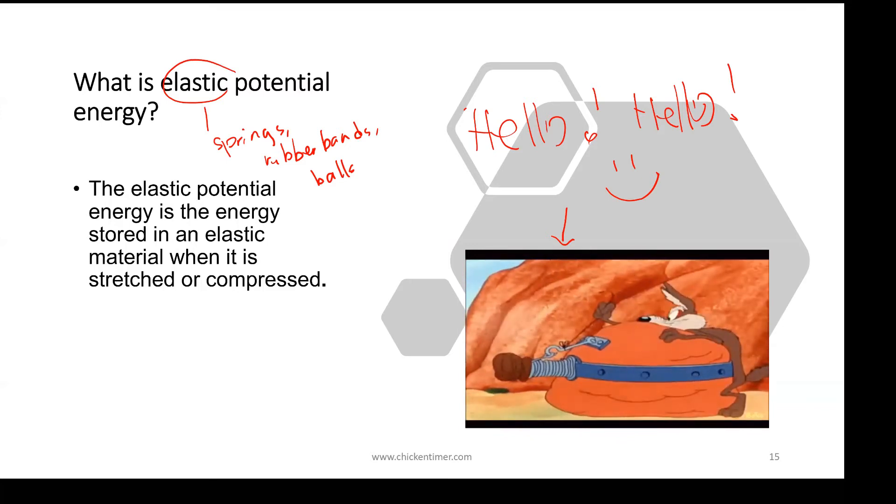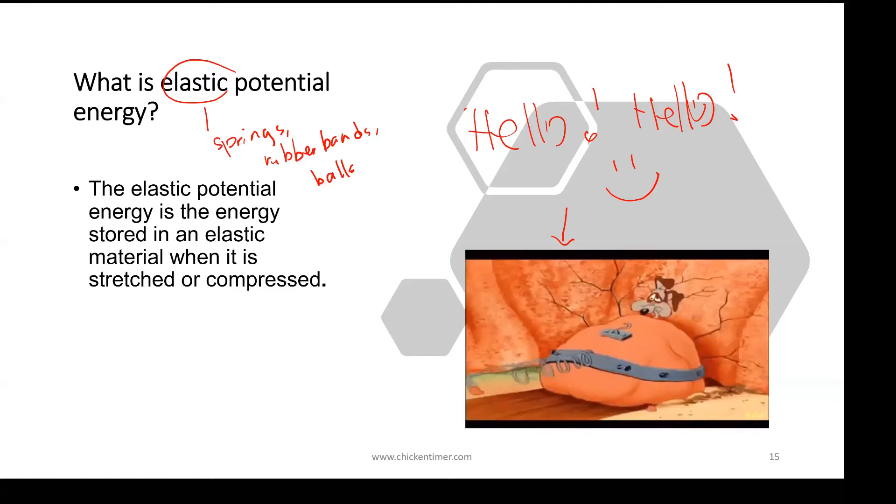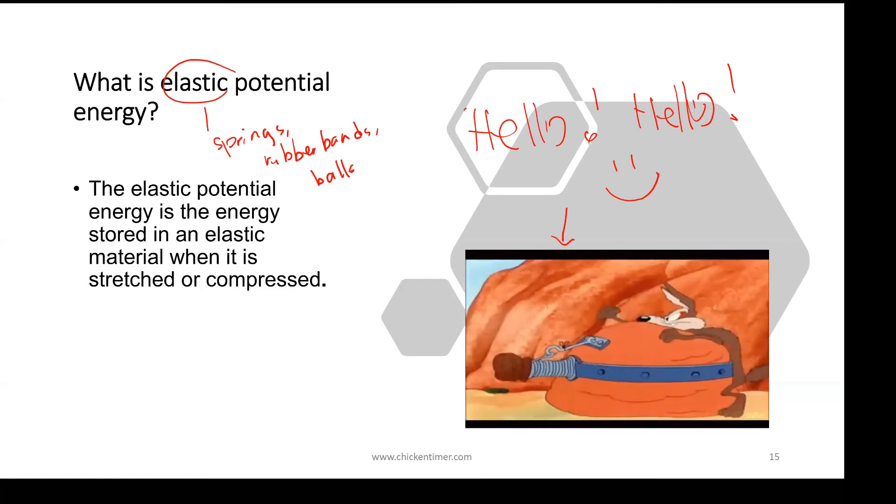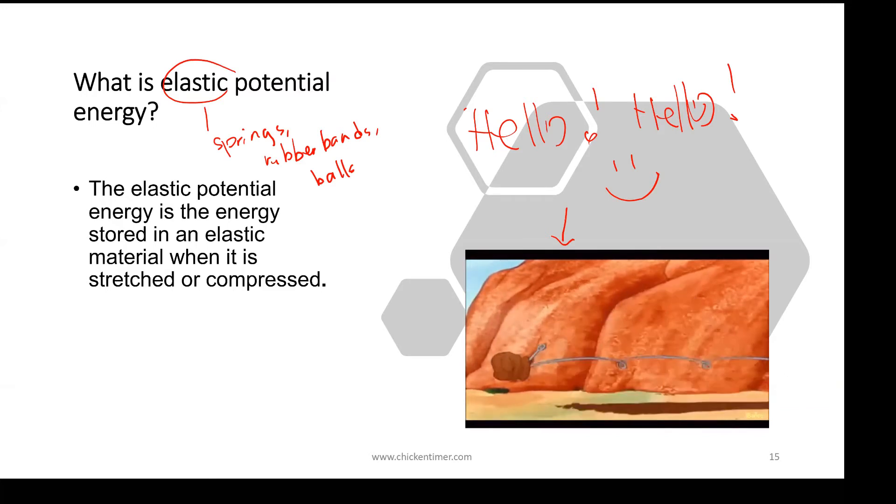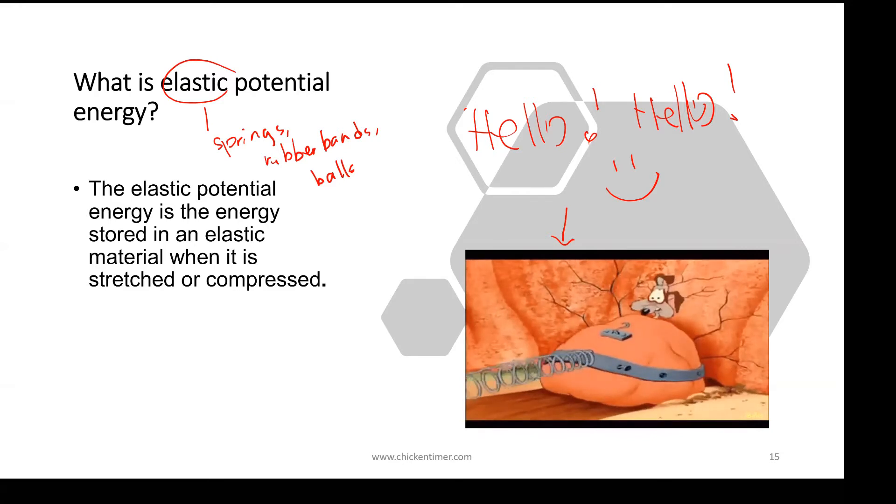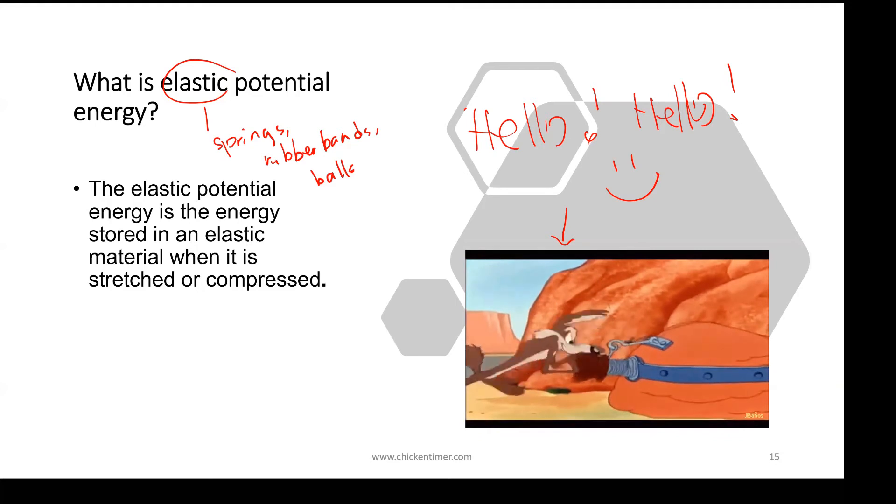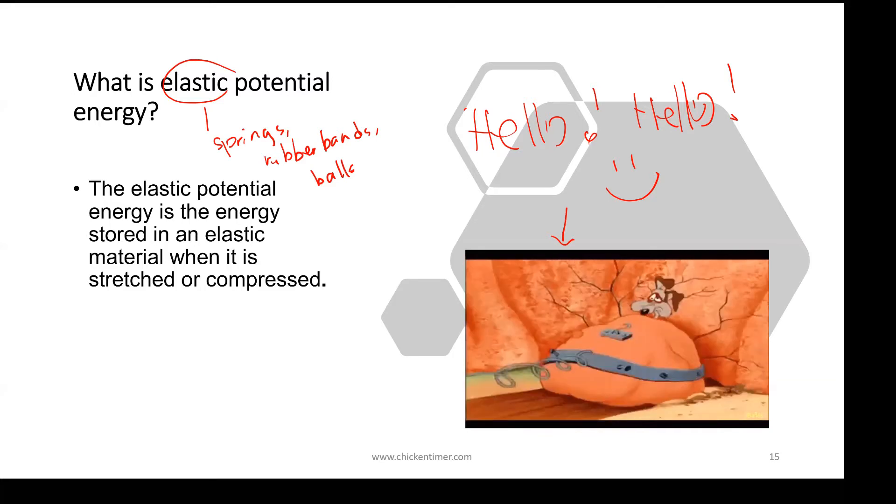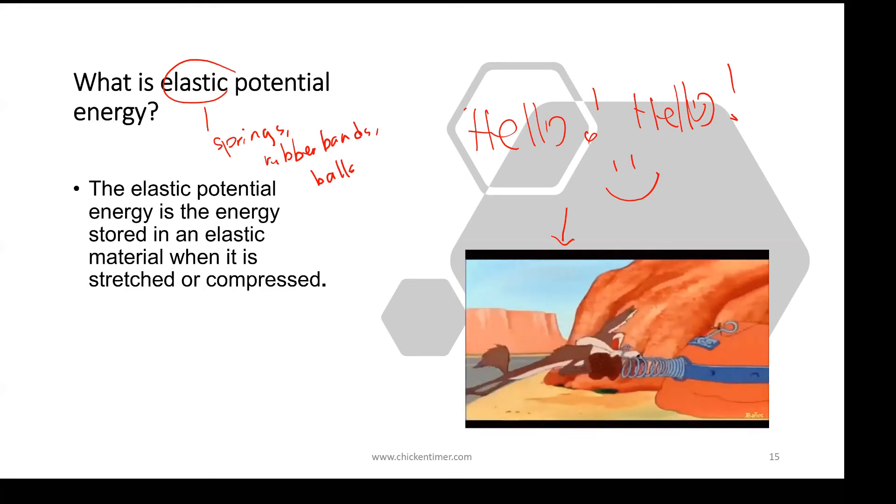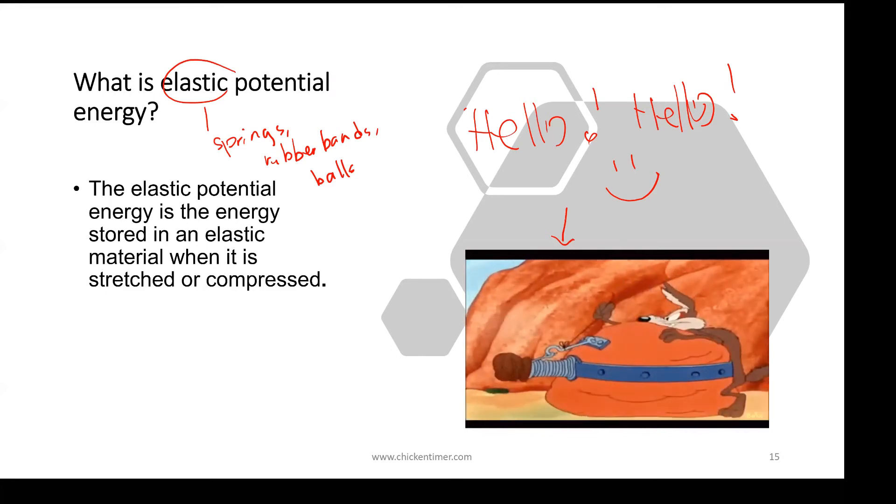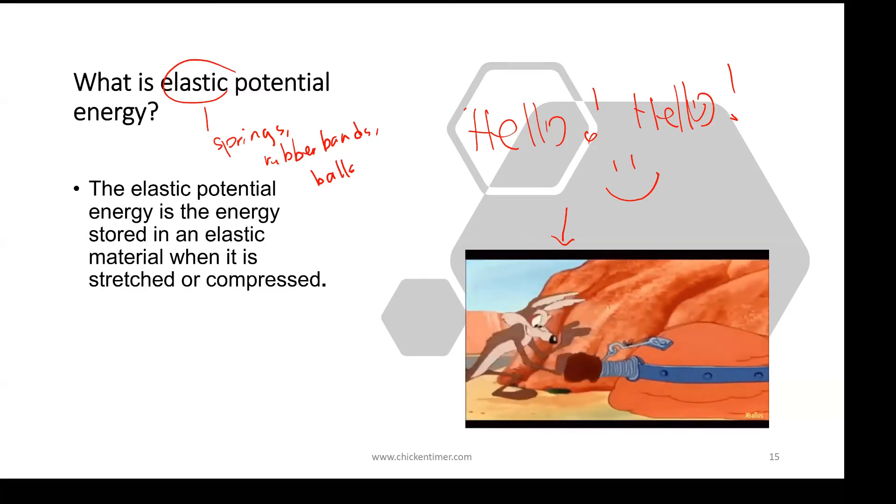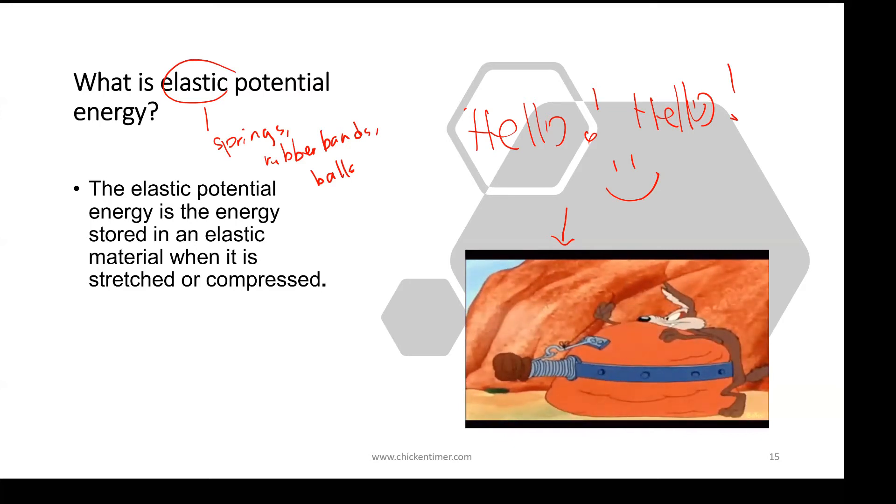So in this case, it stores elastic potential energy, then when it is allowed to be released, it's not compressed or stretched anymore. It will go back to its original shape and release the elastic potential energy in another form. In the picture, it gets compressed and energy is being stored. Then he releases the spring and it gets converted into kinetic energy on himself. That is elastic potential energy.